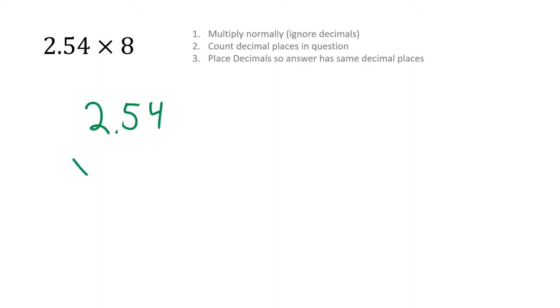The question we have here is 2.54 times 8. We're going to multiply normally, ignoring the decimals. So 2.54 times 8. Notice I kept the decimal in the question, but we're going to ignore it as we multiply. 4 times 8 gives us 32, carry the 3. 5 times 8 gives us 40, plus 3 is 43, carry the 4. 2 times 8 gives us 16, plus 4 is 20. So we write down 20. We've got that section done.